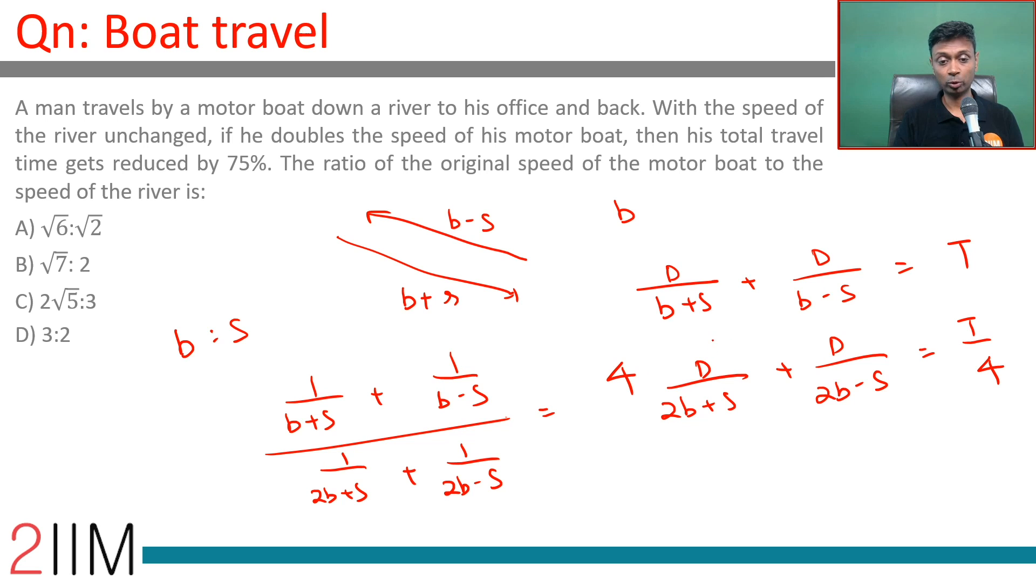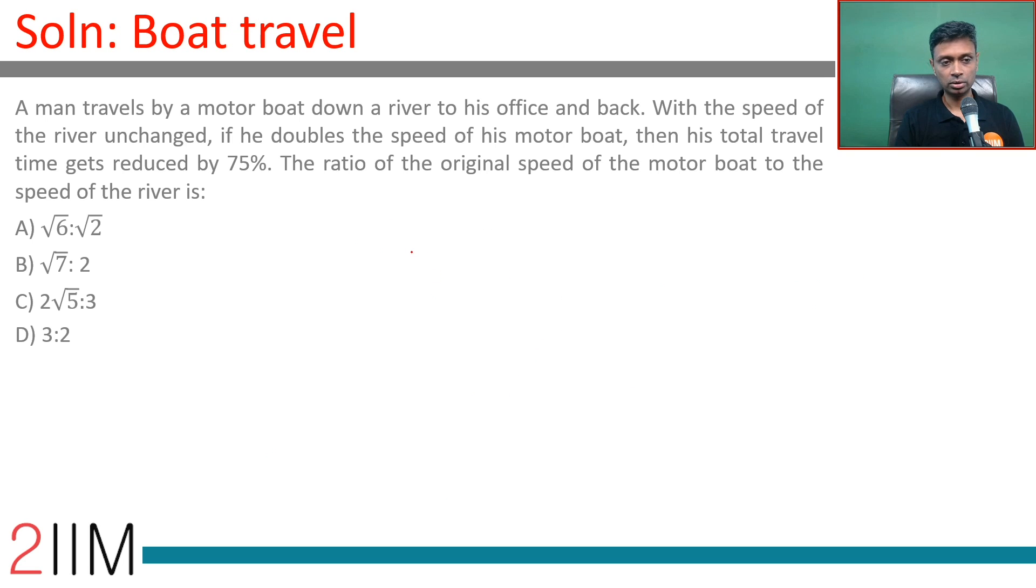Let's simplify this. I am going to take the LCM in the numerator, LCM in the denominator. So, B minus S plus B plus S by B square minus S square divided by 2B minus S plus 2B plus S divided by 4B square minus S square equals 4. The S gets knocked off, S gets knocked off. This is 4B and this is 2B.